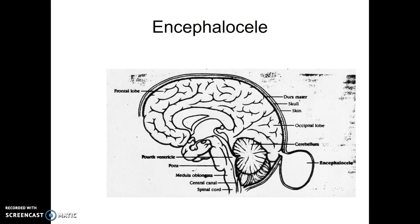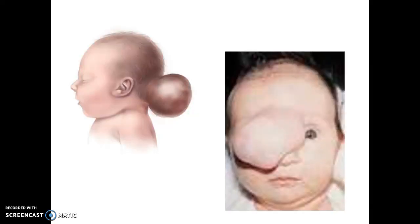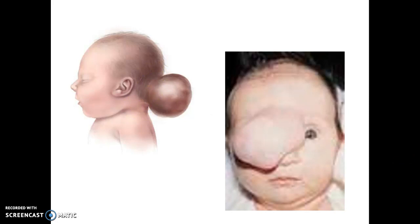Encephalocele is a protrusion of meninges and spinal fluid between some bones of the cranium. It can be facial or in the back. How severe it is depends on how much the cerebral tissue is affected. If it's just meninges and fluid, the child will need surgical correction but can do fairly well. Usually there's underlying issues with the brain tissue, and those do not go away.